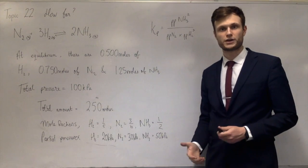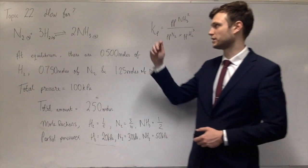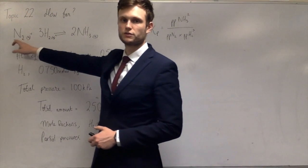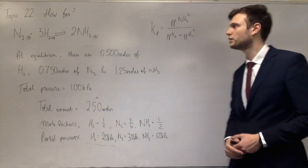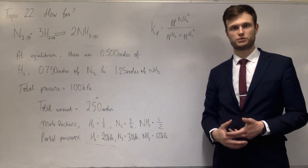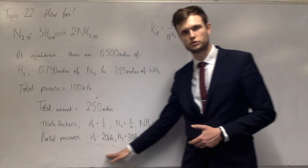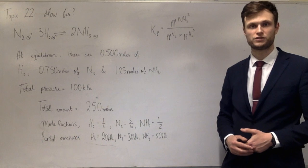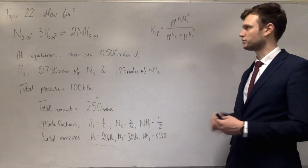For this reaction, KP equals (partial pressure of NH₃)² divided by (partial pressure of N₂) times (partial pressure of H₂)³. You need to keep track of your units — whether you use Pascals, kilopascals, or atmospheres — and make sure you write the correct unit once you've worked everything out.